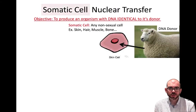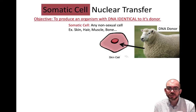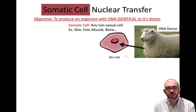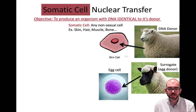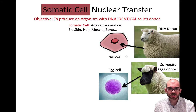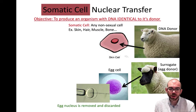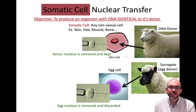With somatic cell nuclear transfer, we first get a somatic cell — a non-reproductive cell with the full chromosome number, typically from a skin, hair, muscle, or bone cell. We also need a surrogate who can bear eggs. Since the egg has the mother's DNA, we remove and discard its nucleus. Then the nucleus is taken from the somatic cell — the DNA donor — and kept.